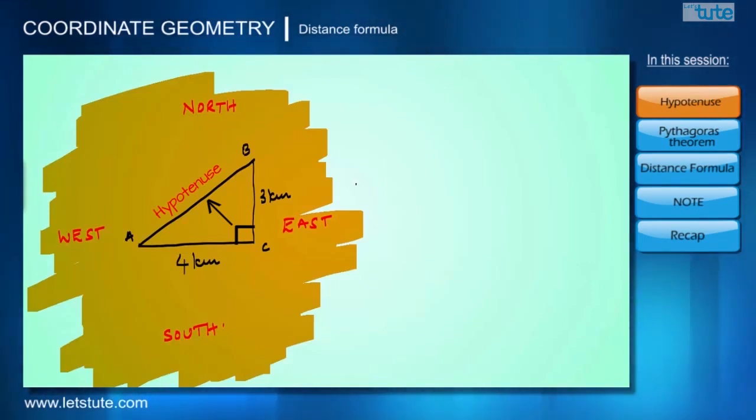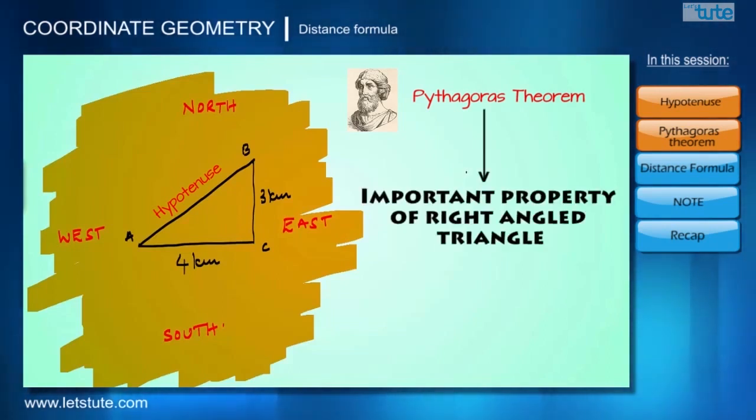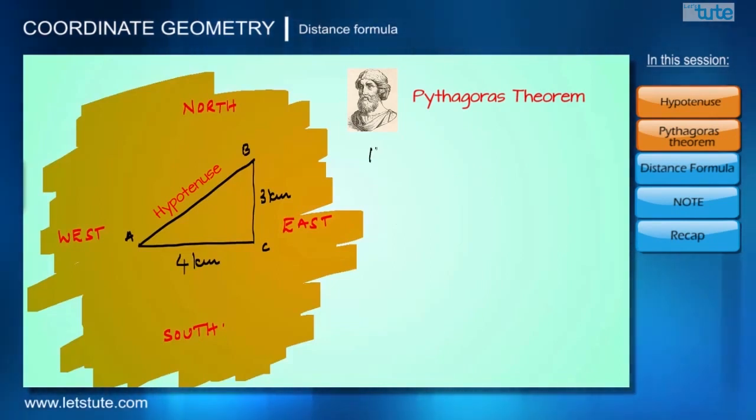We can find this length of hypotenuse using Pythagoras theorem. We already know that Pythagoras theorem is one of the important properties of right angle triangle and it is useful in finding the length of the hypotenuse. It states that square of the length of the hypotenuse is equal to sum of the squares of the remaining two sides.